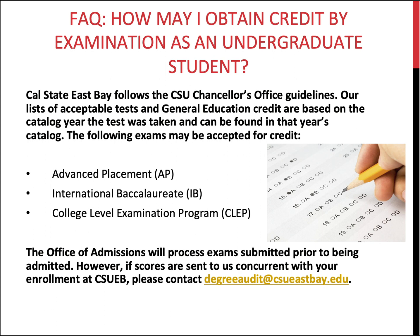How may you obtain credit by examination as an undergraduate student? Cal State East Bay follows the CSU Chancellor's Office guidelines. Acceptable tests and GE credit are based on the catalog year the test was taken and can be found in that year's catalog. The following exams may be accepted: Advanced Placement (AP), International Baccalaureate (IB), or the College Level Examination Program (CLEP). The Office of Admissions processes exams submitted prior to admission. However, if scores are sent concurrent with your enrollment at CSU East Bay, please contact the Degree Audit email account to have your scores posted.